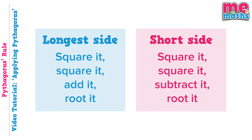We've previously turned Pythagoras theorem into two mini rules. If we're looking for the longest side we square it, square it, add it, root it. Whereas if we're looking for a short side we square both the sides we're given, we subtract it and root it.